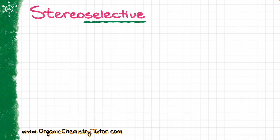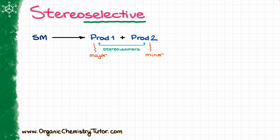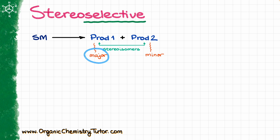When it comes to stereoselective reactions, the definition from the gold book of the IUPAC nomenclature says that in the case of stereoselective reactions, the reaction is going to give you one stereoisomer over another stereoisomer. What that means in normal terms is that if you have a reaction with a starting material, that starting material can produce a pair of stereoisomers — which can be either enantiomers or diastereomers — but one of those products is going to be a major product while the other one is going to be a minor product.